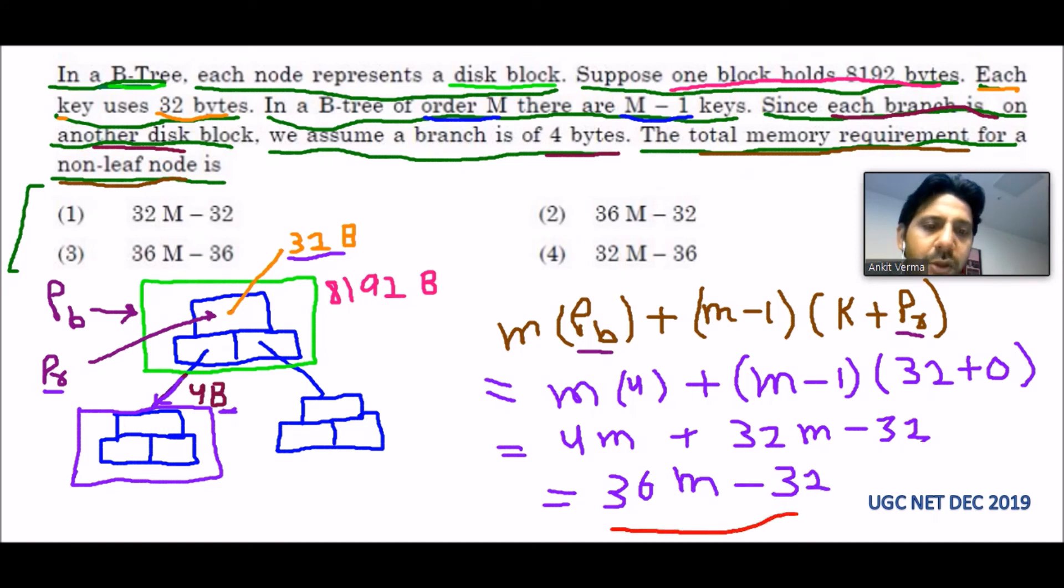This option is matching with the second option, 36M minus 32. So the correct answer is second.